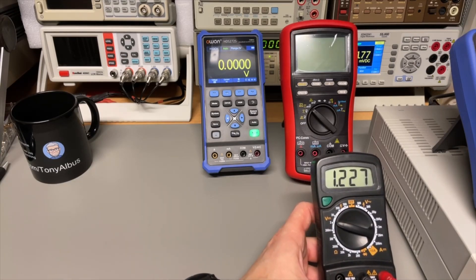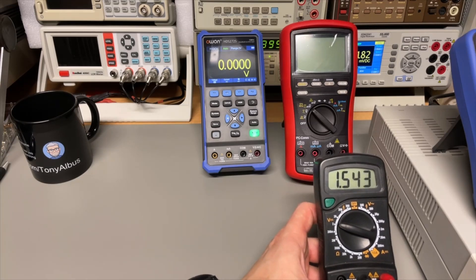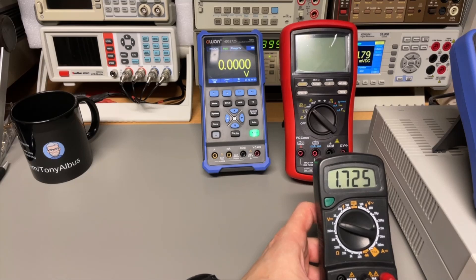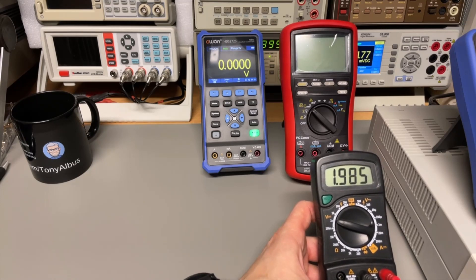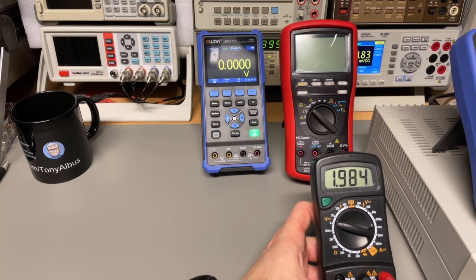Now, I'm getting closer to the two-volts. And then we can see it will not display a two. So, slowly up, up, up, up, and here it goes. So, the highest, what this one can do, is 1, 9, 9, 9. But this is a three and a half digit meter.